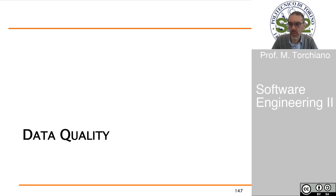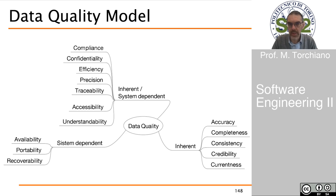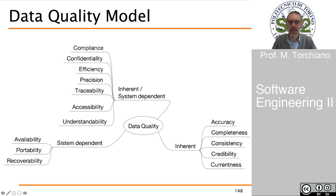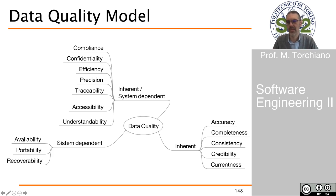Another important aspect introduced in the ISO 25000 standard is considering data quality as a separate aspect from software quality itself. The quality model behind data quality considers three different perspectives: inherent — characteristics of the data focused on the data itself without considering the system that hosts it; system dependent — data characteristics that depend on the system; and other characteristics that can be considered from both perspectives.